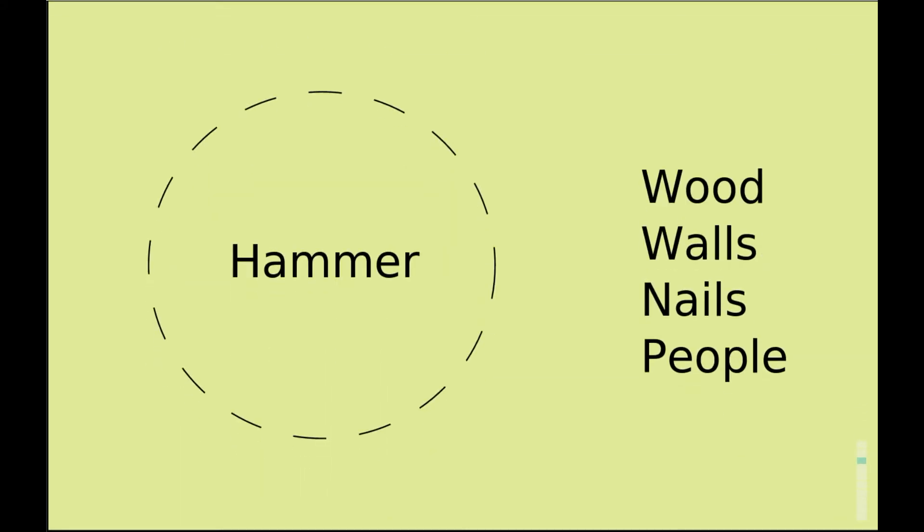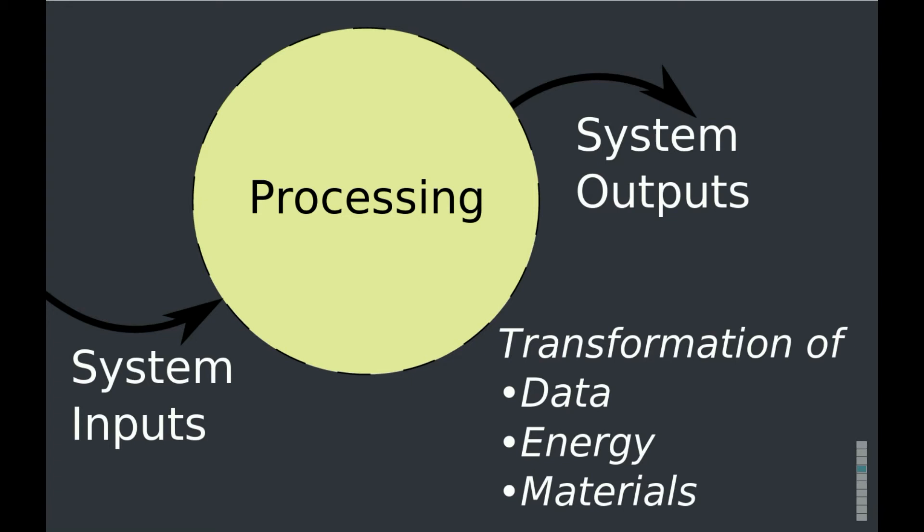When we talk about what a system does, we usually talk about system inputs, system outputs and processing. The processing can transform the things that come in and the things that go out. They can transform data, energy and materials.